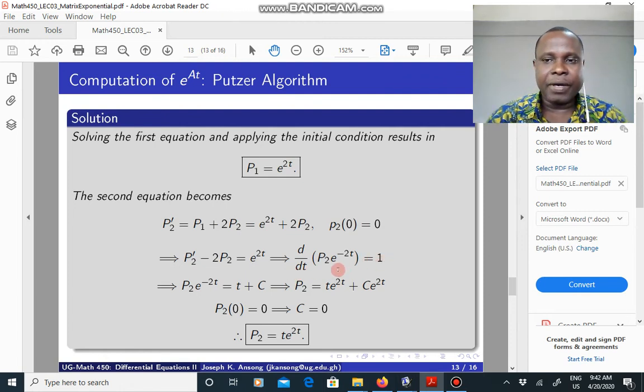That gives us this. We compute the integrating factor and then manipulate it, you get that. Solve this out, that gives you P2 is equal to this. Apply the initial condition, you see that C equals 0. And then P2 will be t E to the 2t.